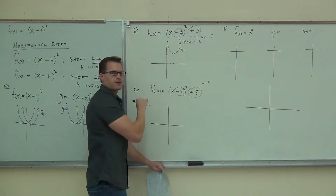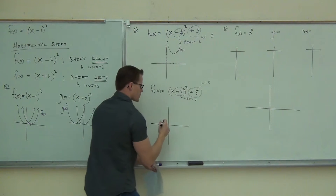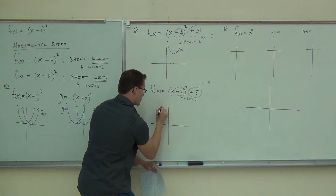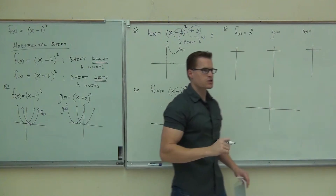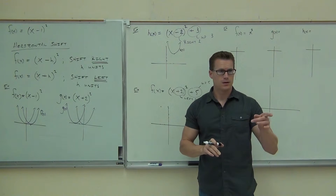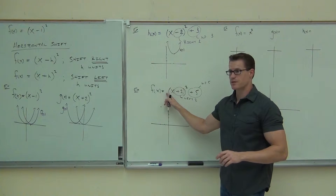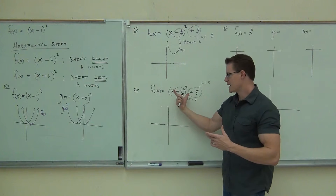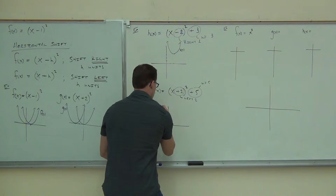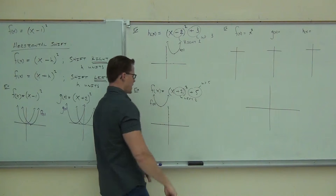How about this plus 2 inside of my function — what does that do? Left 2. Left 2, great. So we're going to go up 5 and then to the left 2 — we'll put our point right there. Is this going to be an upward facing or downward facing parabola and why? Upward facing because it's positive. What's positive? The coefficient before the x. If that was a minus or a negative, we would have this inverted — reflected. If it's not, it's going to be upward facing. So this right here is still going to be upward facing. Make sure we label that f of x.